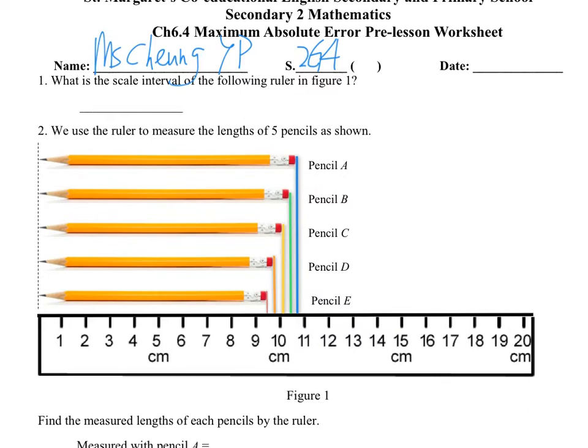For the first part, for the scale interval, it actually means just talk about our ruler, and then each of the scale, how much we count. So it would be 1cm, 2cm, 3cm each, so that's why our scale interval would be 1cm.